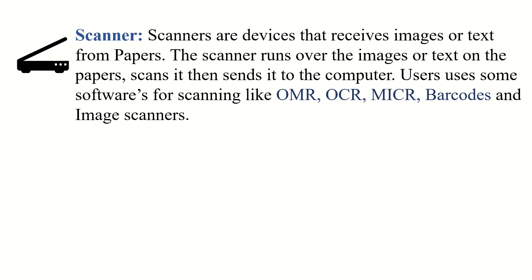Next is the scanner. Scanners are devices that receive images or text from paper. The scanner runs over the image or text on the paper, scans it, then sends it to a computer. Users use software for scanning like OMR, OCR, MICR, barcodes, and image scanners.